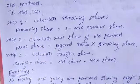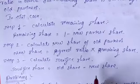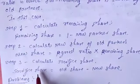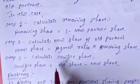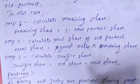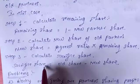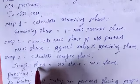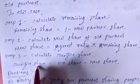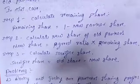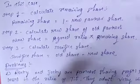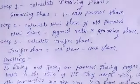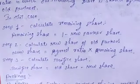After that, calculate the sacrifice ratio. Sacrifice share equals old share minus new share. The reason we use 'share' here and not 'ratio' is that this share becomes the individual share. That is why we use the word 'share' here, not 'ratio.' And last, you get the sacrifice ratio.